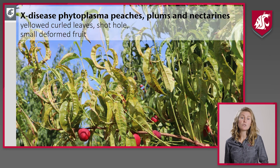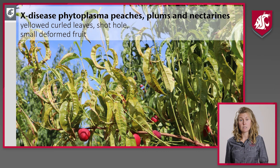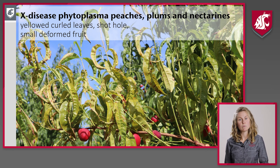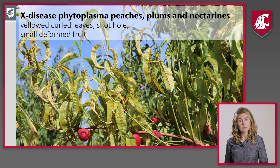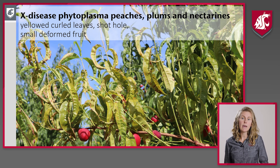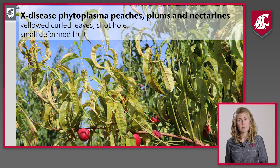In stone fruit, we get slightly different symptoms with X disease. We will get yellowing of the leaves and lesions on those leaves that then fall out and cause a shot hole-like appearance.